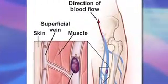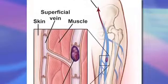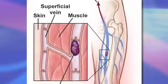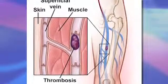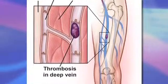Venous disease is a common problem. The veins return deoxygenated blood to the heart against gravity. This is accomplished with one-way valves within the veins, as well as compression of the veins by the calf muscles.